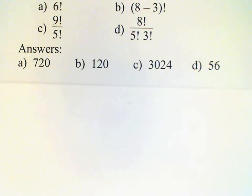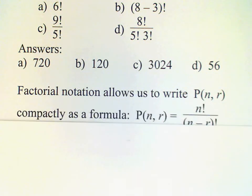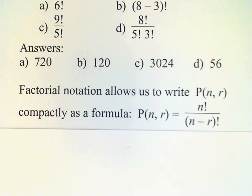The factorial notation allows us to write PNR as a formula. PNR is N factorial divided by N minus R factorial.